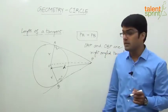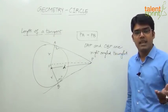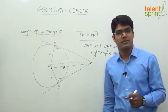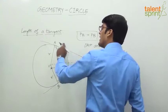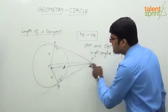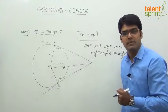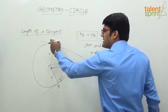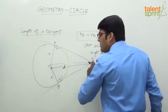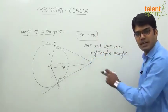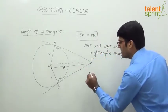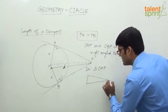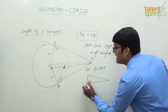OAP and OBP are both right angle triangles. In a right angle triangle, the Pythagorean theorem holds true — a very important result. By the application of the Pythagorean theorem we can find the length of the tangent PA or PB. In triangle OAP, the right angle is at the point of contact A. PA is the base, OA is the perpendicular, and PO is the hypotenuse.